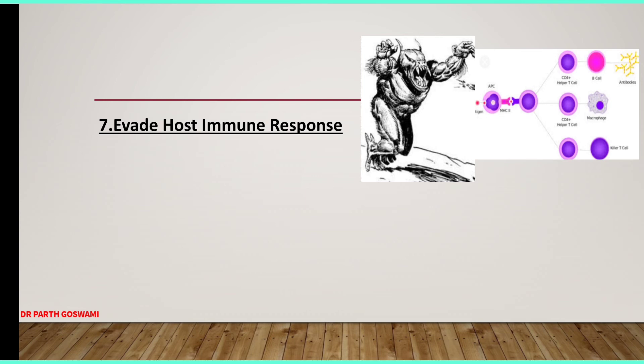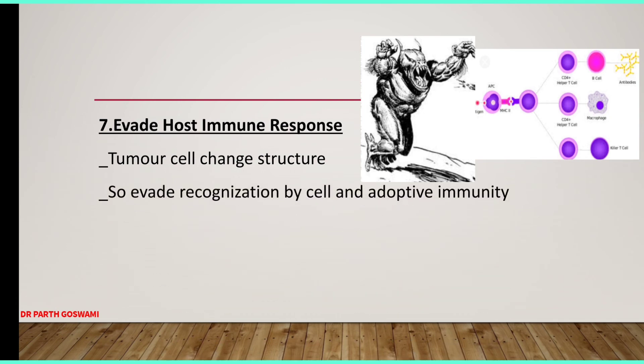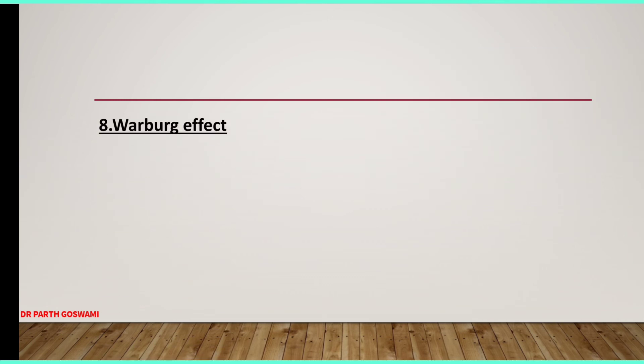The seventh molecular basis of cancer formation is evasion of the host immune response. Our immunity is mainly made up of T lymphocytes and B lymphocytes. In cancer, the cancer cells continuously change their structure so that our immunity cannot recognize the tumor cells. Because the immune system cannot recognize them, tumor cells evade our immune response and cancer progresses. The eighth molecular basis is the Warburg effect.